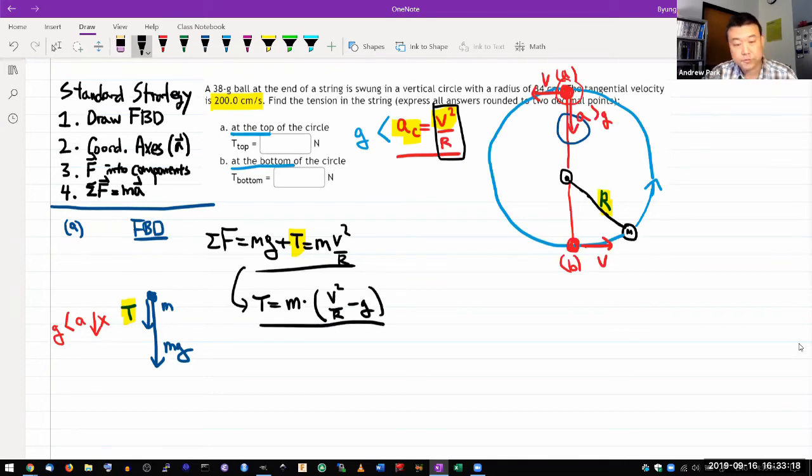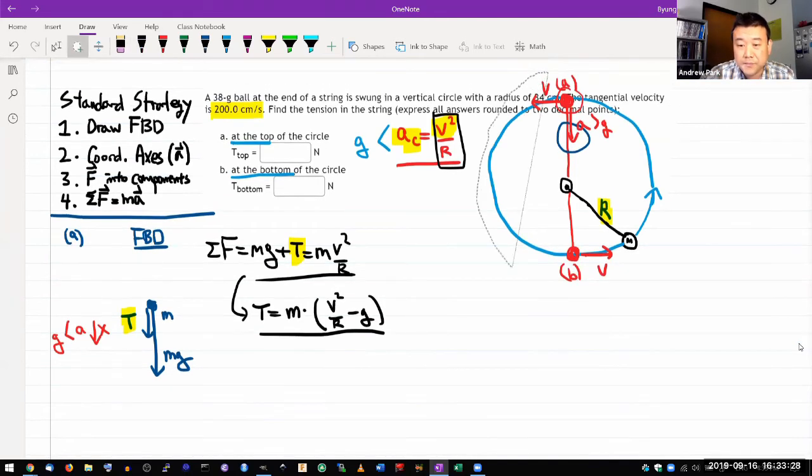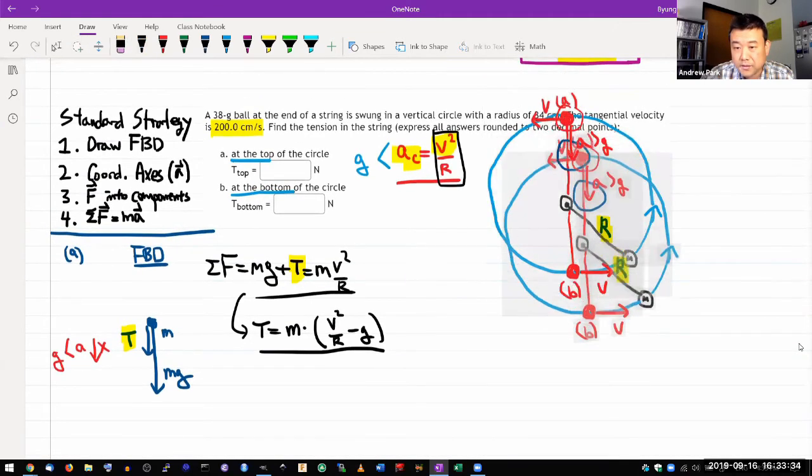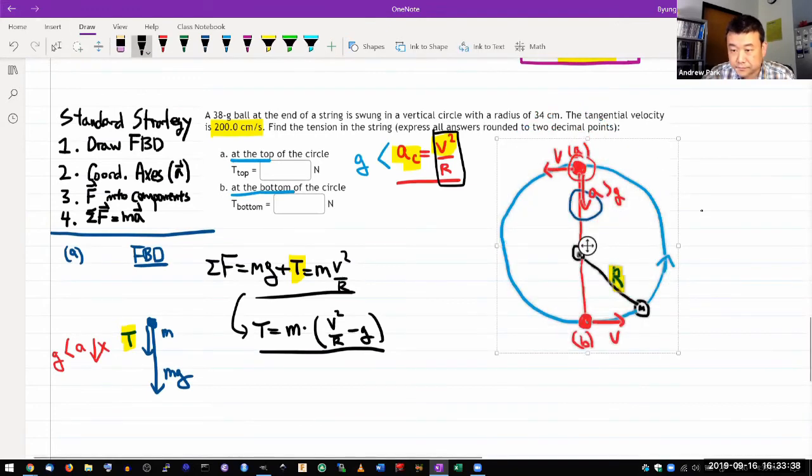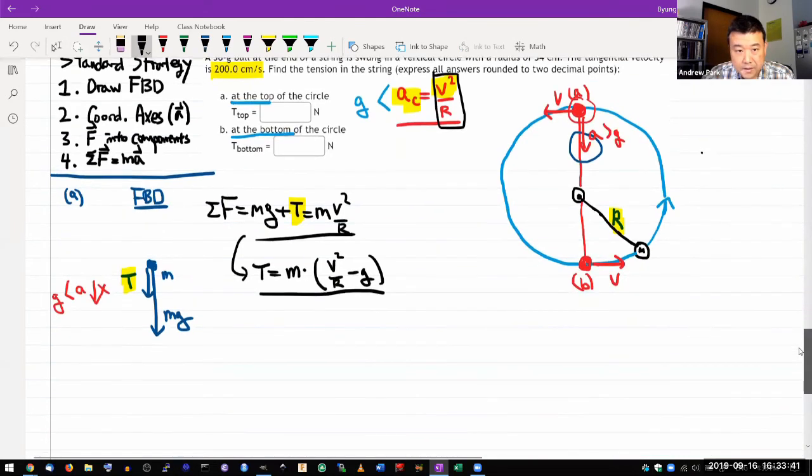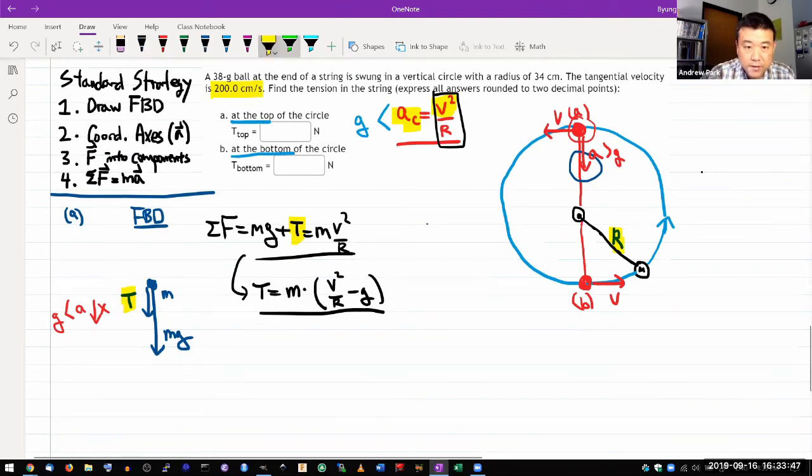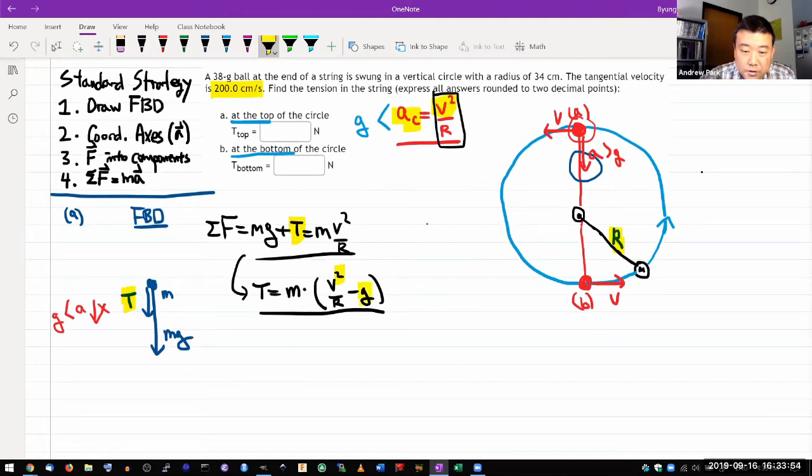So solving for that one unknown, tension is equal to, let me factor out m, m times V squared over r minus g. All you have to do is plug in numbers. Make sure at this point I will just convert everything to basic SI units and plug in that basic SI unit number. Because sometimes I like to let the units just cancel out, but because you have this V squared thing, I don't think the units will cancel out. So it's better to convert all the units to kilograms, meters, and seconds. So that's part A.